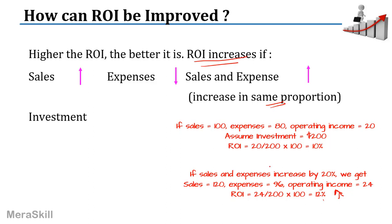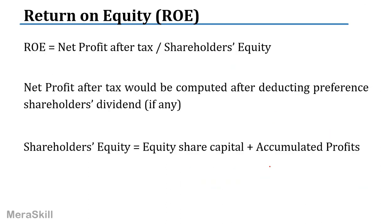What should happen to the investment for the ROI to increase? If the investment reduces, the ROI will also increase because the denominator decreases. Return on equity: return on equity is net profit after tax divided by shareholders' equity. The net profit which belongs to shareholders after taxes — and after preference dividend, if any — is divided by shareholders' equity, which could be equity share capital plus accumulated profits. Sometimes instead of ROI, we may compute the ROE, or sometimes the ROA — return on assets.